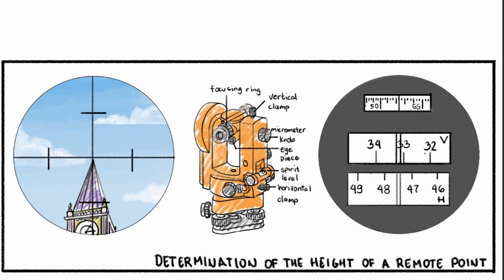Now, looking through the telescope, you'll see something like this image on the left. Make sure to place the crosshair on the specific point of interest. In our case, that's the top of the tower. You may use the focusing ring on the telescope to zoom in and out until the image is clear.